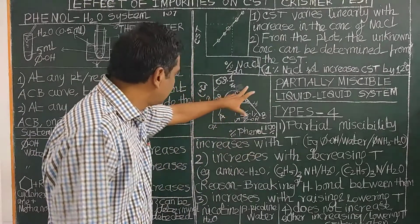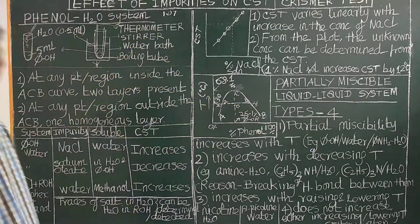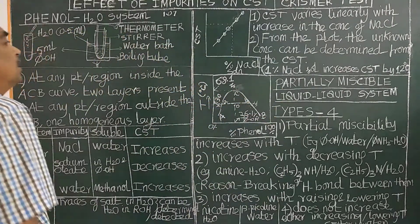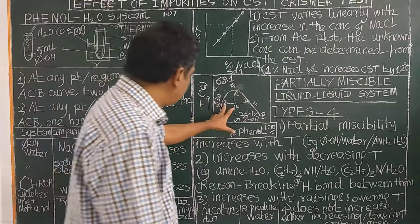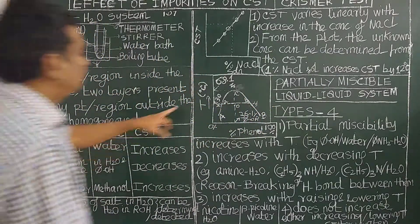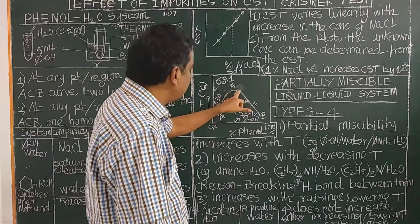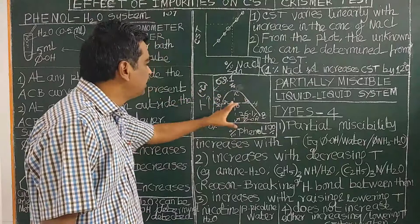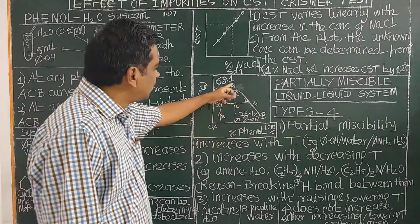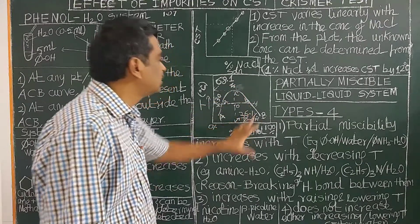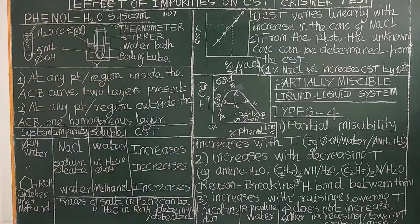This is the critical solution temperature curve for the phenol-water partially miscible liquid-liquid system. The AB line is called the tie line and the temperature C is called the critical temperature, that is 68.1 degrees Celsius. At the critical temperature, the composition is 66.1 percentage of phenol in water. Now let us explain the curve.